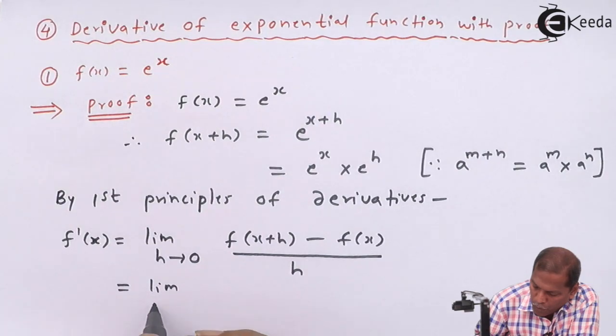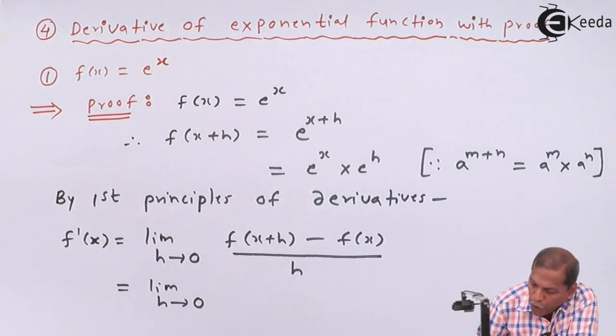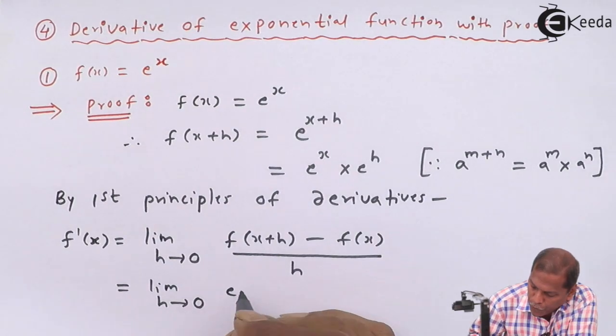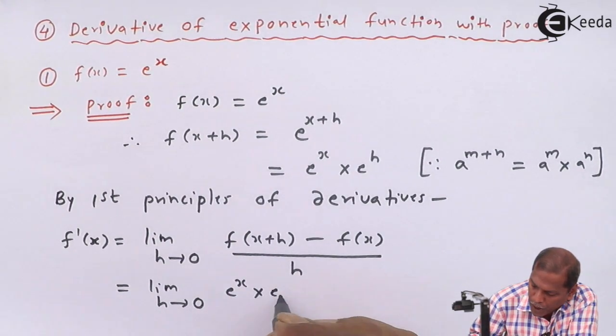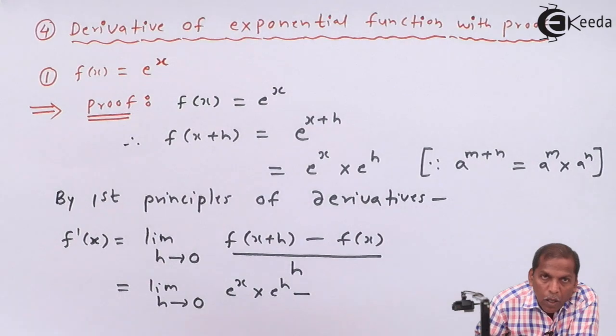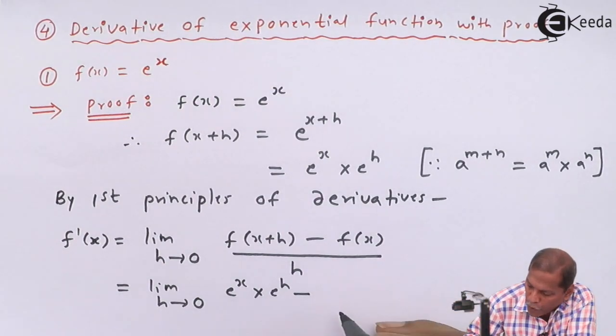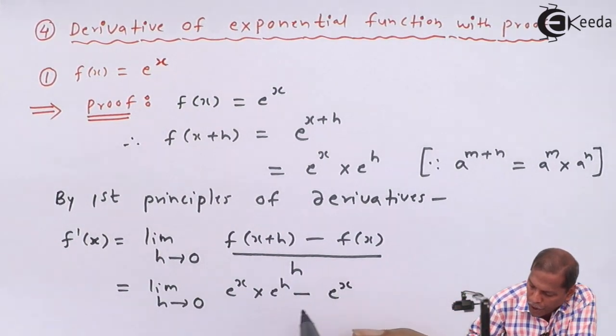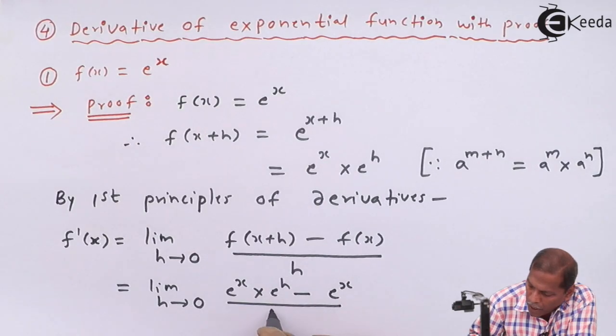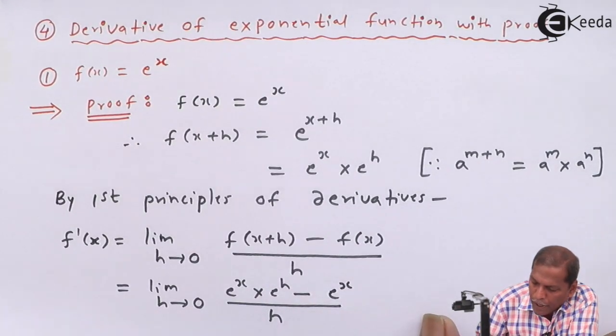Is equal to limit h tends to zero. For f of x plus h we substitute e raise x into e raise h, minus for f of x we write e raise x, and then whole thing divide by h.